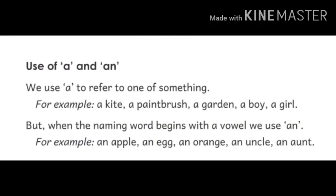I will tell you how to use 'a' and 'an'. We use 'a' to refer to one of something. Means: जब हम किसी singular चीज़ के बारे में या एक चीज़ के बारे में बात करते हैं, तब हम 'a' का यूज करते हैं। Examples: a kite, a paintbrush, a garden, a boy, a girl.